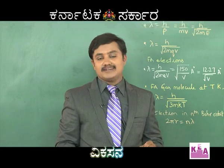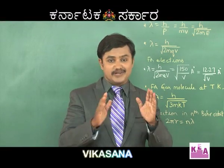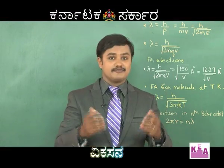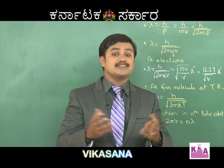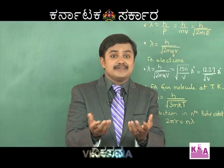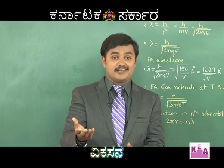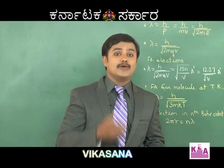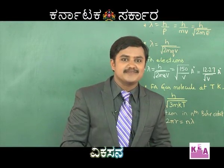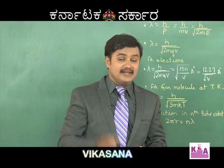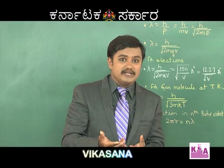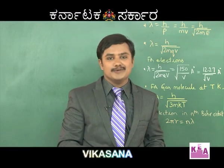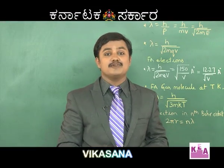Dear students, in this episode let us have a look at one of the most beautiful chapters in your entire syllabus — dual nature of radiation and matter. Before we go to questions, let us review some concepts and formulas. The million dollar question was: what is light made up of? Many scientists explained the nature of light in their own way — some said light is made of waves, others said particles. But in 1927, it was Louis de Broglie who concluded that light sometimes acts as waves and sometimes as a particle, in his dual nature theory.